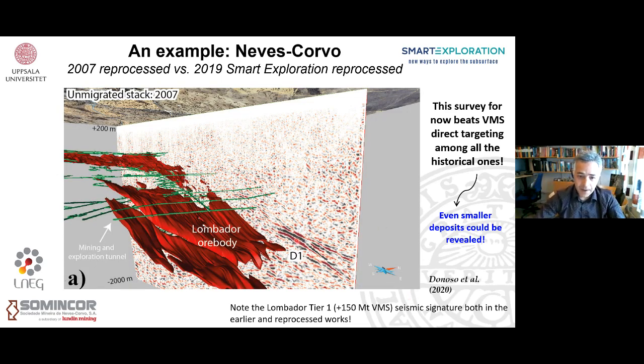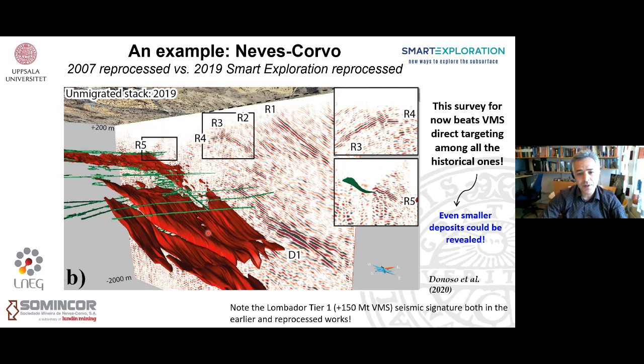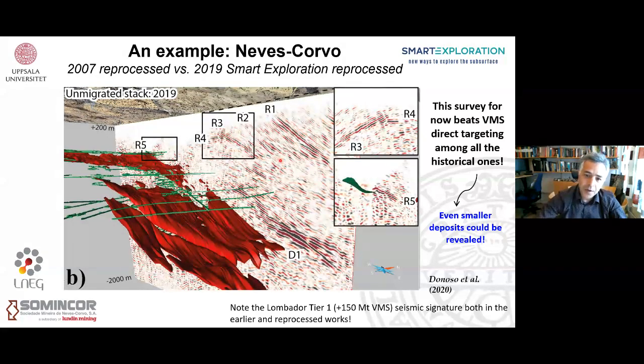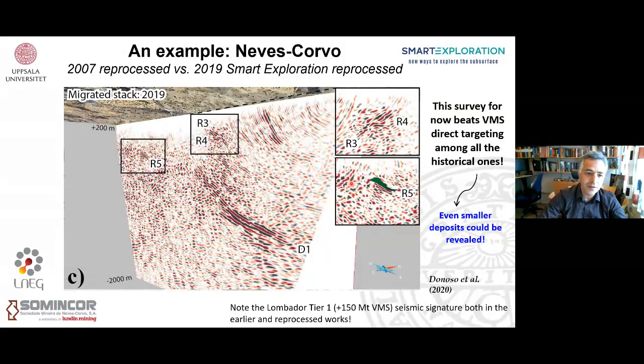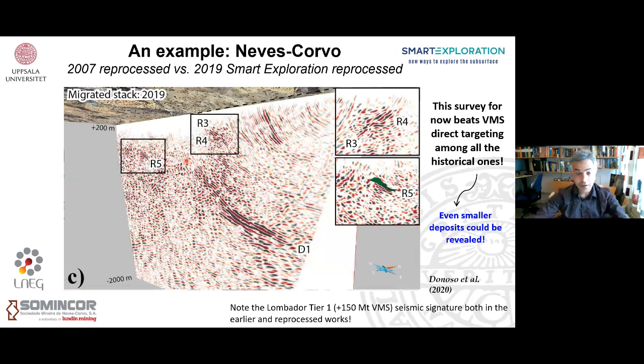So this is the data set that was processed. This one is not digitally available. It's just hard copy from 96. Lombador, now we know it's there, but if you're not really, you don't know what you're looking for, you could say it's pretty noisy data. But anyway, now we know that's Lombador as it was processed originally. The data set was given in 2007 to a company to be reprocessed, so that's what came out of it. Unmigrated, we kind of shifted it so we can actually see the section with respect to the location of the deposit that's now pretty well constrained with boreholes.